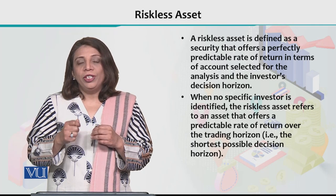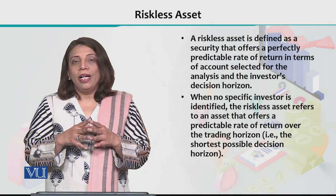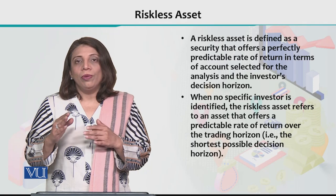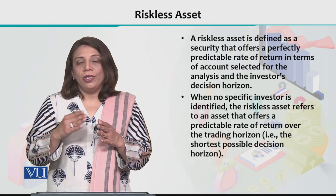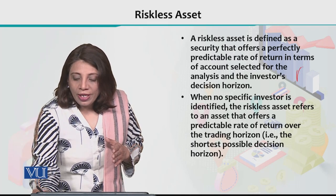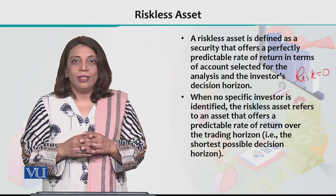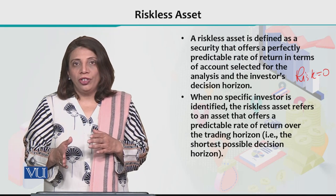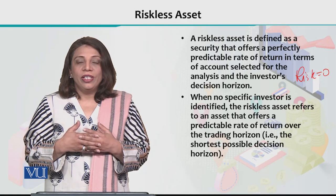After three months, at maturity, you know the rate of return. There is no chance of the interest changing — in other words, the returns are known with certainty and the element of risk is equal to zero. The probability of risk is zero, so that type of asset is known as a riskless asset.